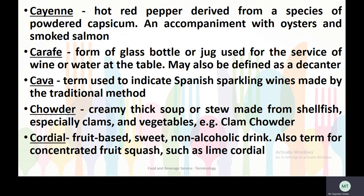The next term is cayenne — a hot red pepper derived from a species of powdered capsicum, accompanied with oysters and smoked salmon. Carafe is a form of glass bottle used for the service of wine or water at the table, and may also be defined as a decanter. Cava is a term used to indicate Spanish sparkling wines made by the traditional method. Chowder is a creamy thick soup or stew made from shellfish, especially clams and vegetables.